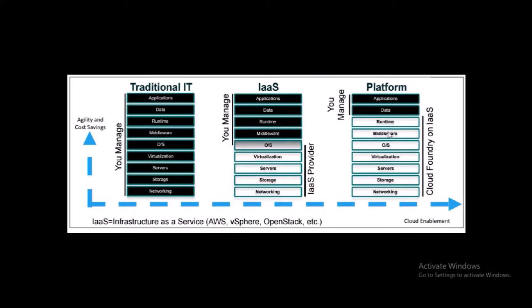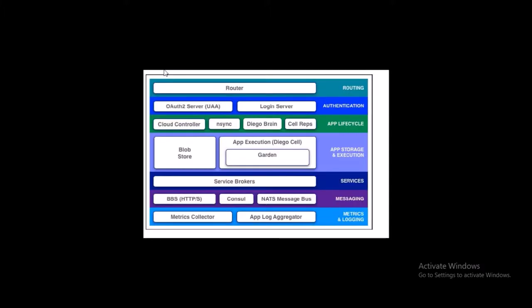Then one step further is the platform model. In this model, from networking to runtime layer, everything is managed by your Cloud Foundry provider. You just need to manage your application and application data. Below this layer, everything is managed by your Cloud Foundry provider — you don't really need to know what hardware and software are hosted below. You just need to focus on your application development, enhancement, and performance.